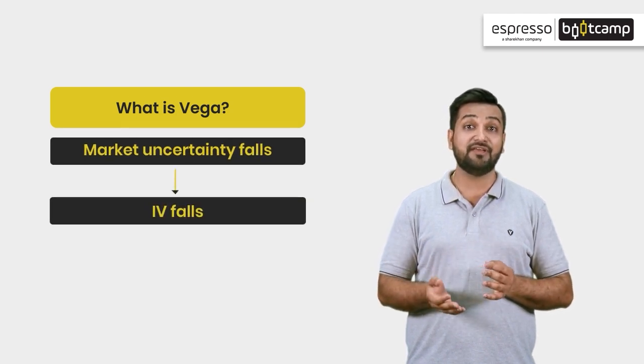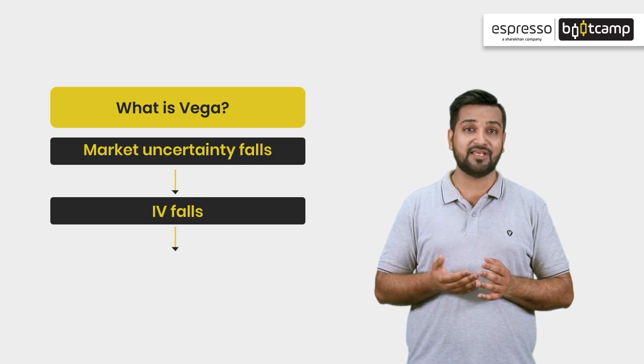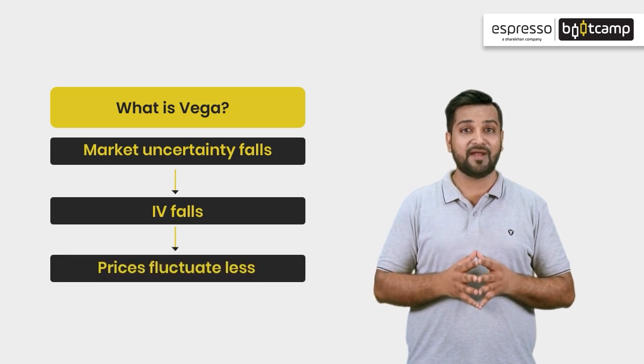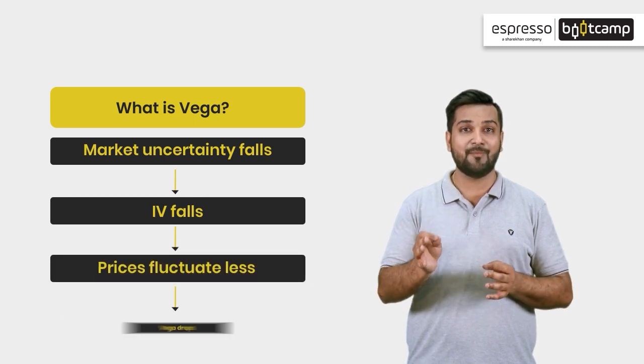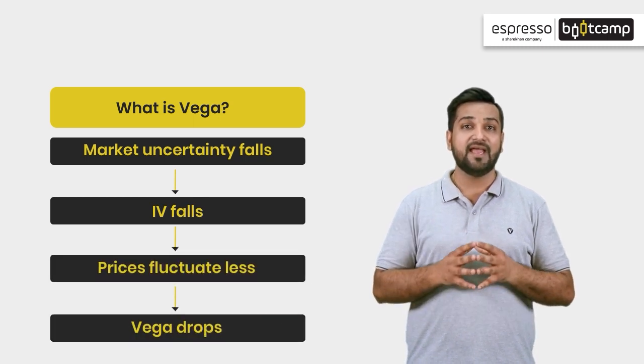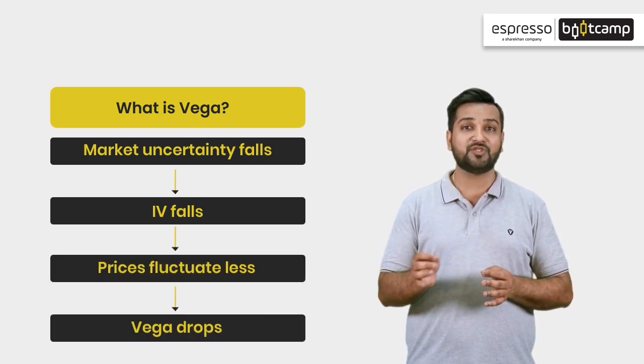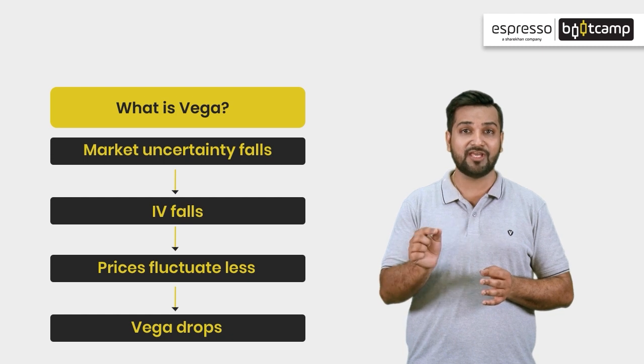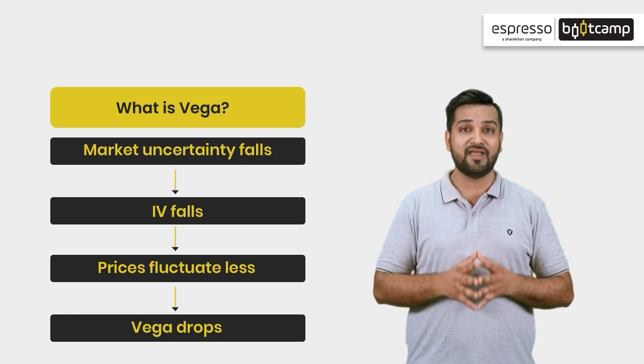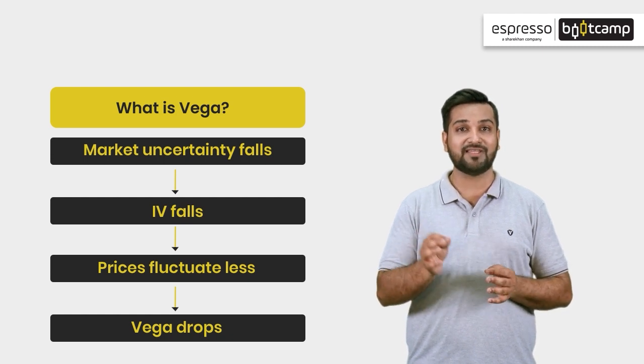When certainty comes back in the market, implied volatility decreases. With this, price swings are small and Vega also decreases.